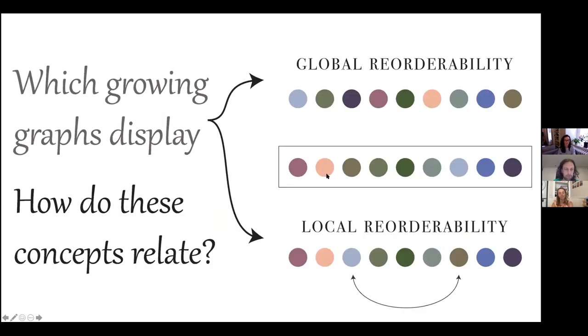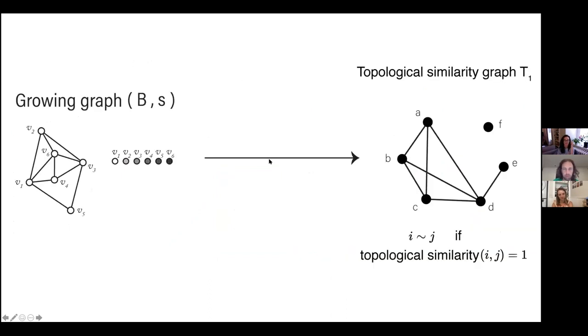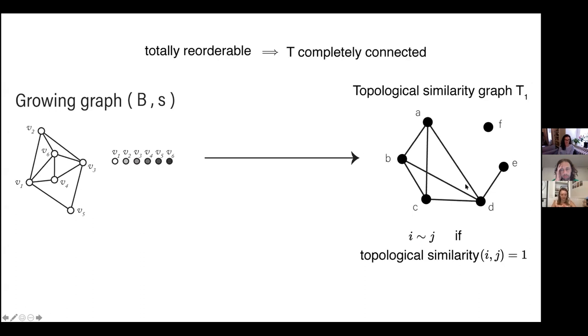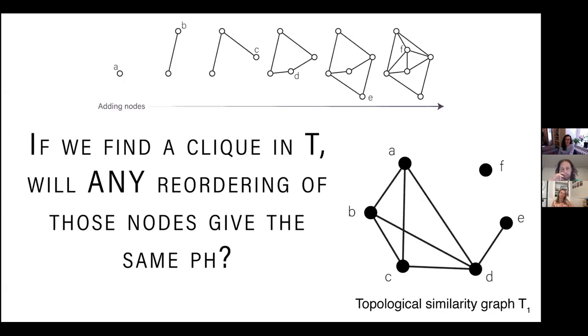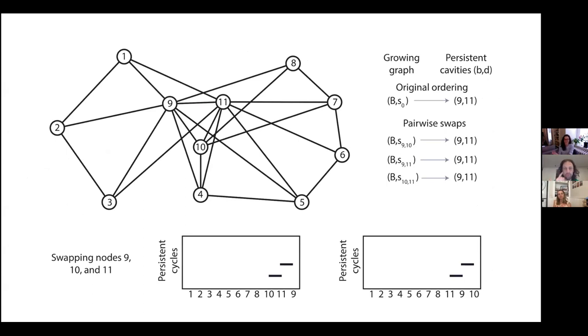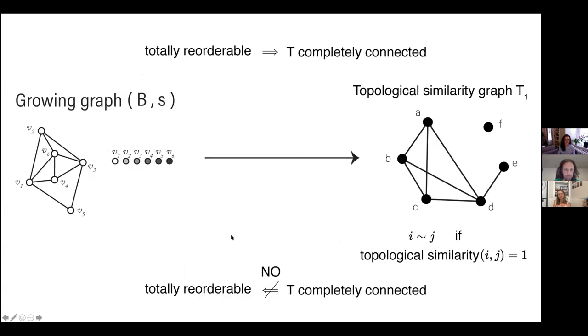So finally, one last point before I end is to quickly talk about how these concepts relate. The idea being that if we take a growing graph, we can create a topological similarity graph by defining edges between nodes if their swap does not change the barcode at all. And one thing we know is if we have a totally reorderable growing graph, then T will be completely connected. But the question becomes if T, this graph is completely connected, does this mean this growing graph is totally reorderable? We can reduce this question to asking if we find a clique in T, will any reordering of those nodes get the same persistent homology? And as you can imagine, I have left it till the last minute because the answer is very boring. No. And here's a nice counter example. So in fact, the answer is no, but I think the topological similarity graph or simplicial complex as noted by Jacob Hansen can still perhaps offer some interesting information about the growing graph.